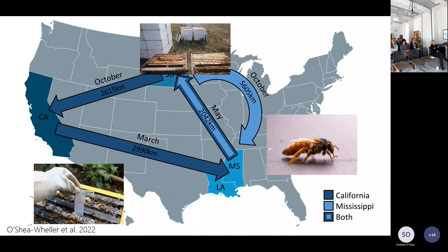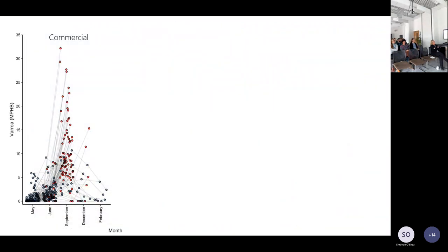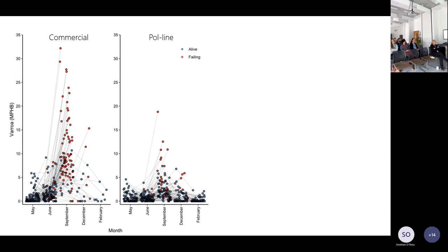What then happened was basically a Varroa apocalypse for the commercial colonies. This graph shows commercial colony Varroa levels and their survival: from May to June Varroa levels went crazy, and the red dots show colonies that died — basically almost everything died, so by February we had a very small number left. But for the pol-line bees it was a lot better: they managed to keep Varroa levels largely under control and many more survived until the end of the year.